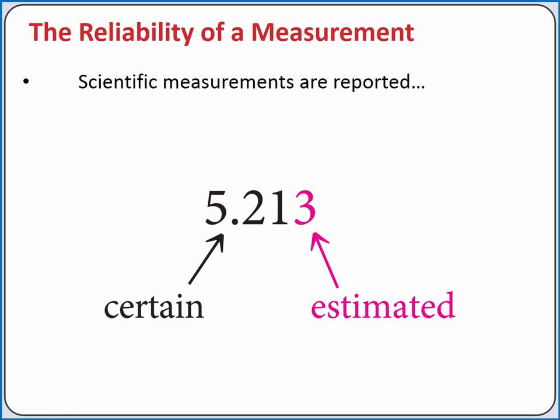In science, we have to be careful and consistent about how we report measurements. Scientific measurements are reported so that every digit is certain except for the last digit, which is estimated.